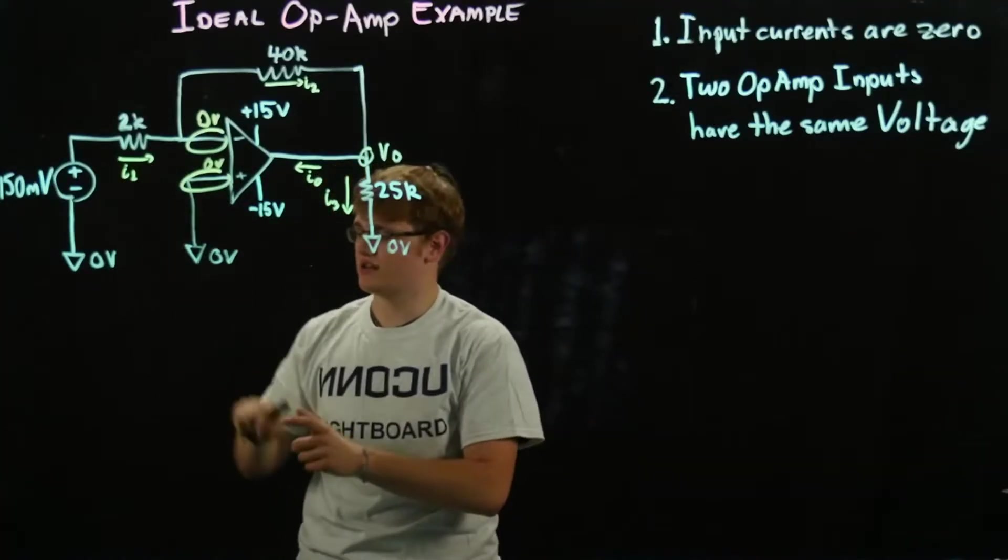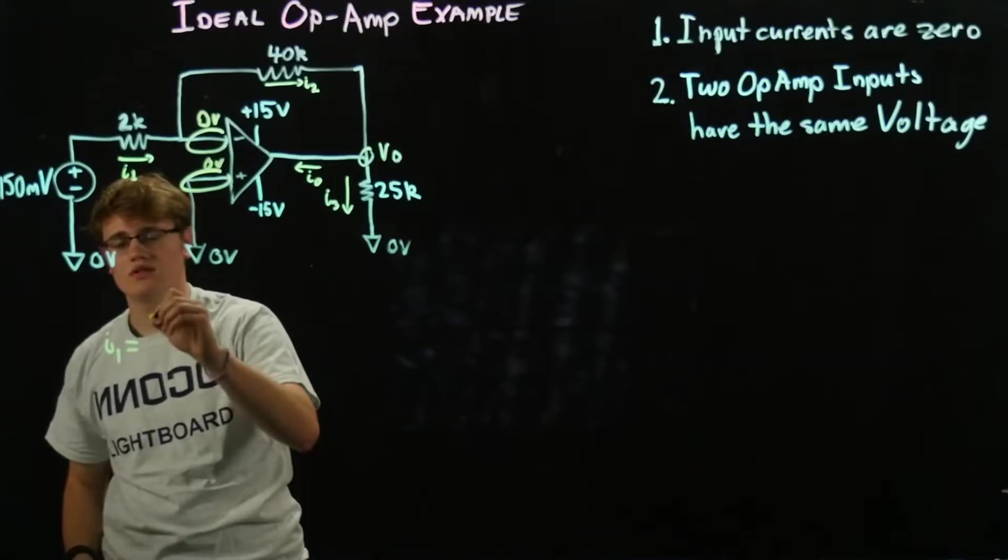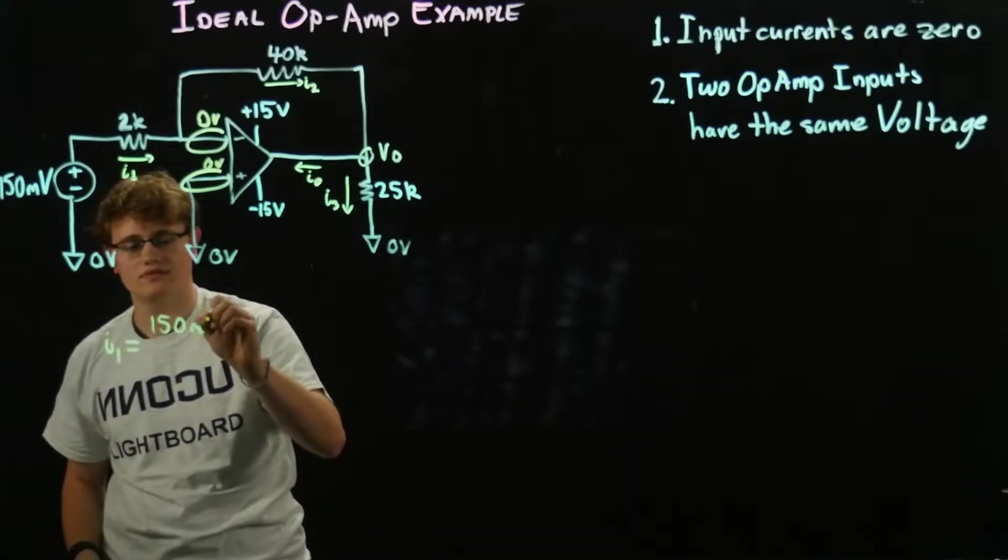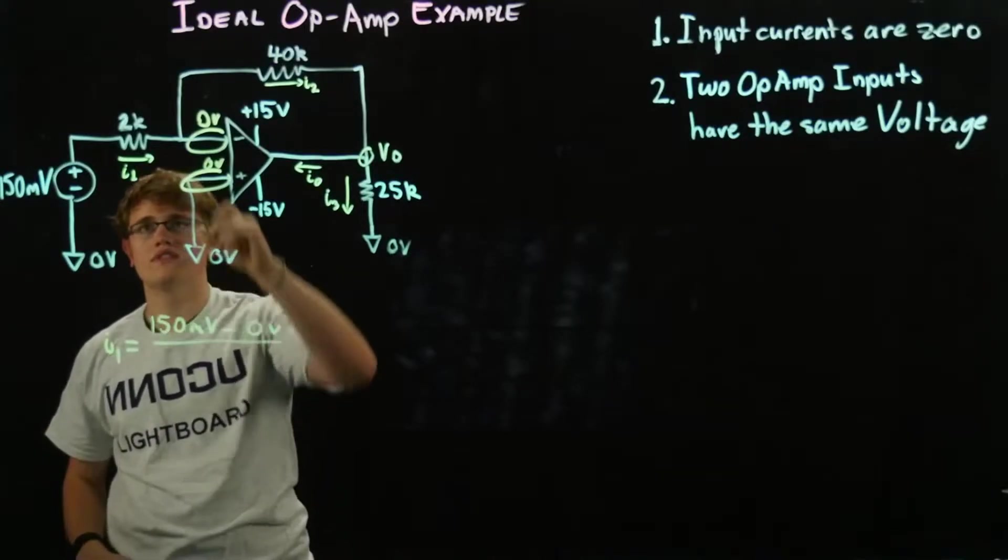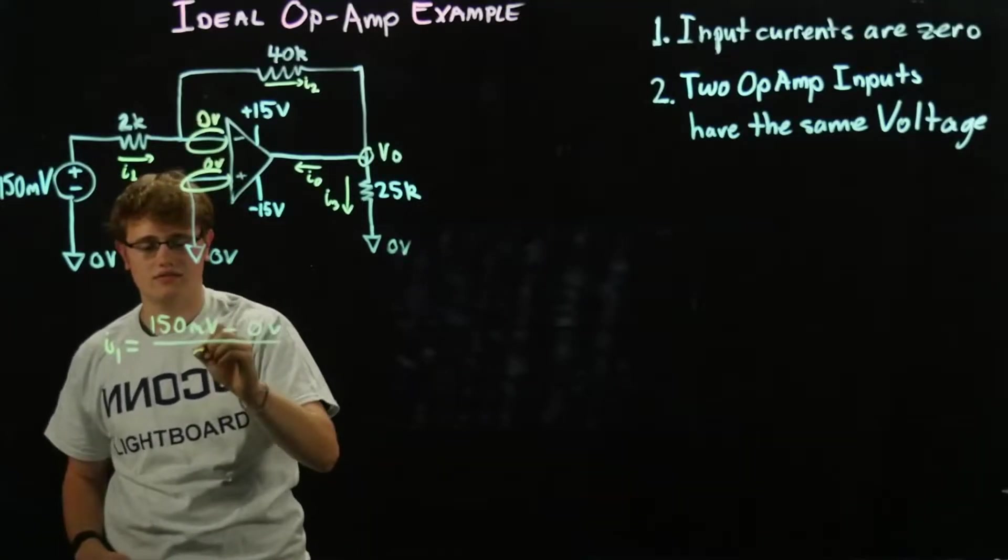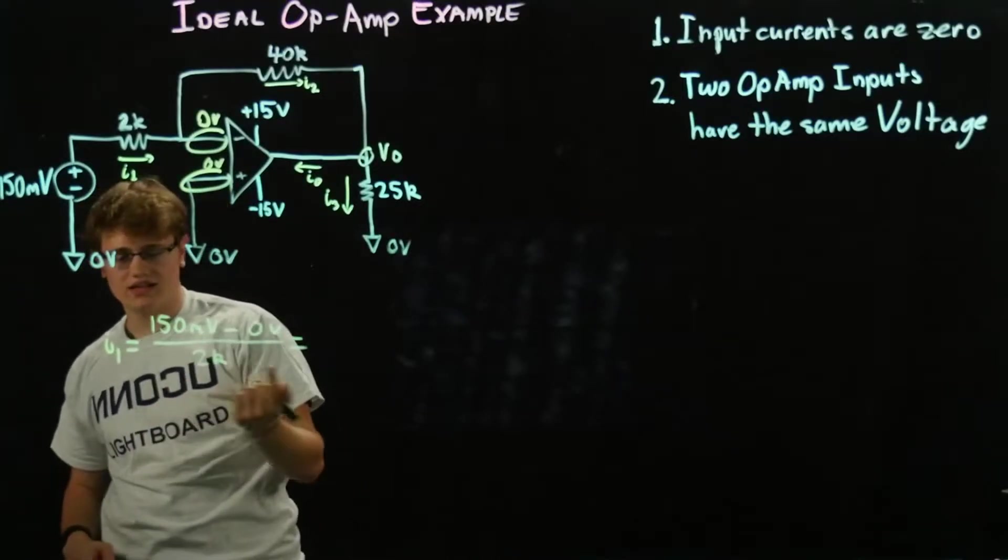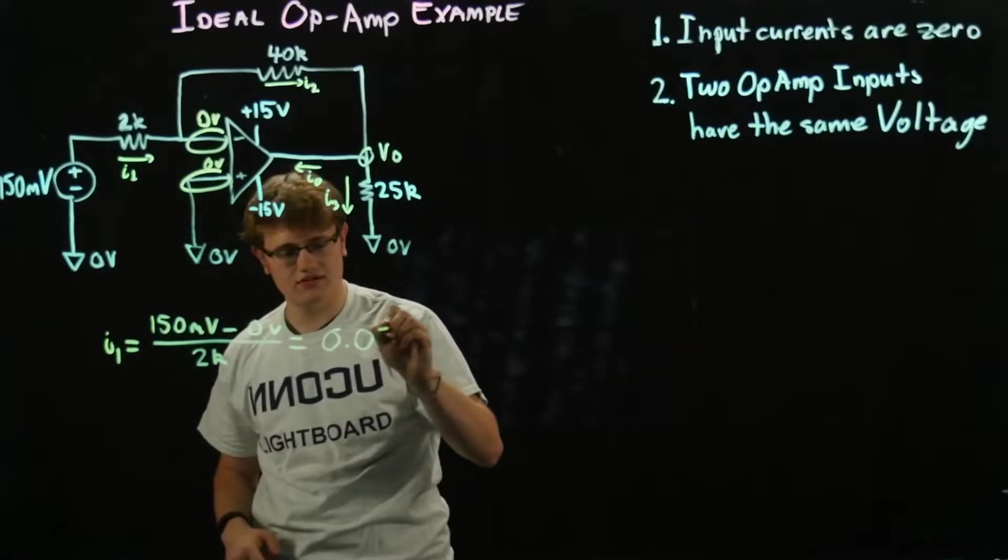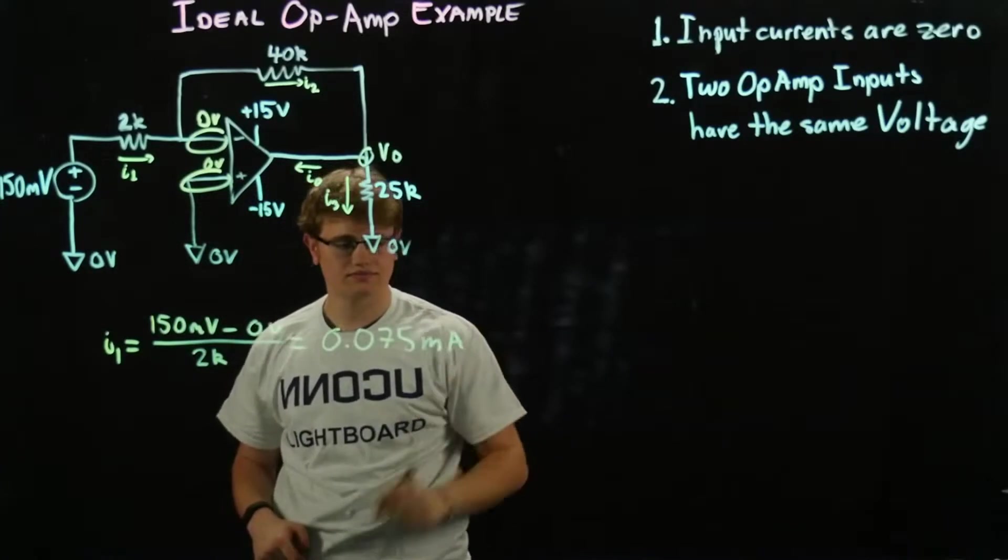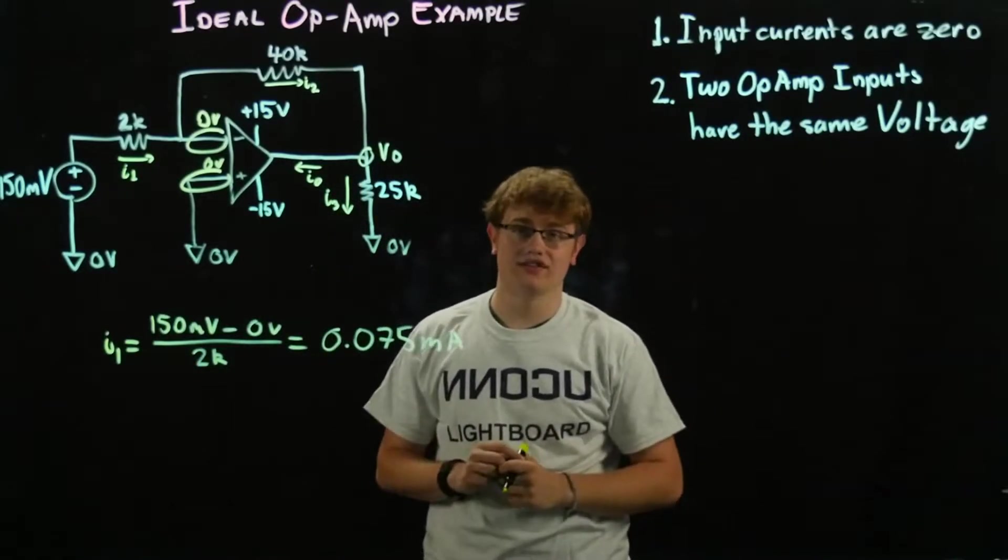So we know that I1 equals 150 millivolts minus zero, all over this resistance right here, which is 2k ohms. Now we do the calculation for that, we're going to get 0.075 milliamps. So now we know I1, I1 is checked off.